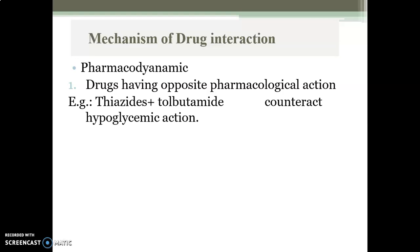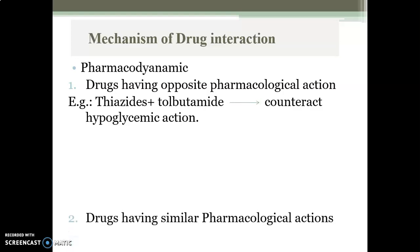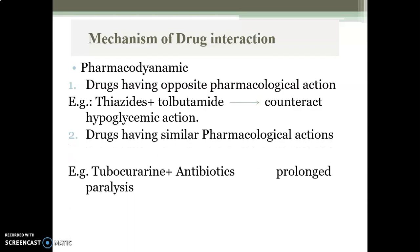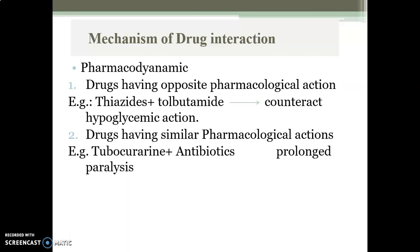Pharmacodynamic mechanism — first, drugs having opposite pharmacological action: thiazide and tolbutamide. Thiazide is a diuretic and tolbutamide is an anti-diabetic drug; they have opposite actions, so there is counteraction of the hypoglycemic action. Second, drugs having similar pharmacological action: tubocurarine and antibiotics both have similar actions, so they will prolong paralysis in the body.